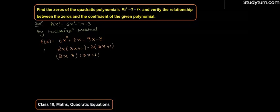p(x) को 0 consider करने पर, यहां से x की value आ जाएगी: x = 3/2 and x = -1/3. So these are the zeros of the given quadratic polynomial — these are the values at which the given polynomial equals zero.